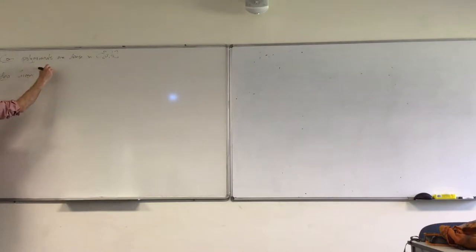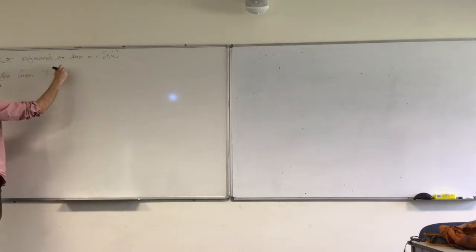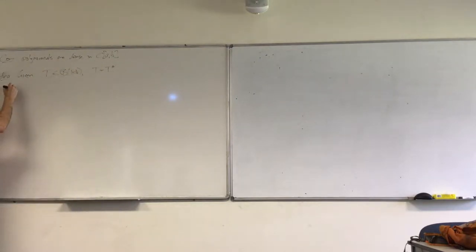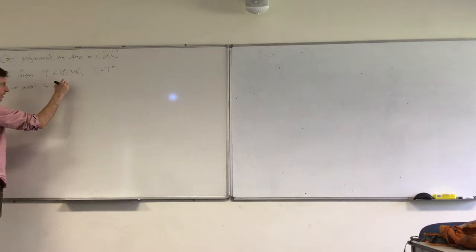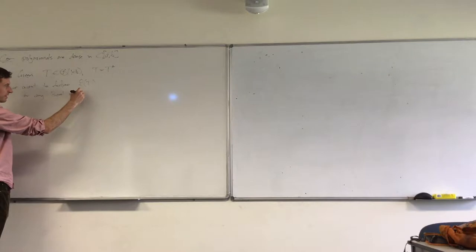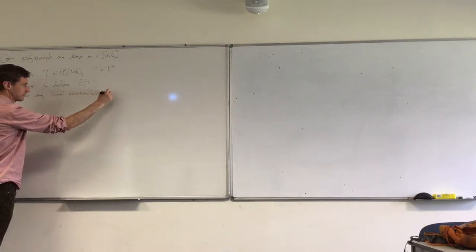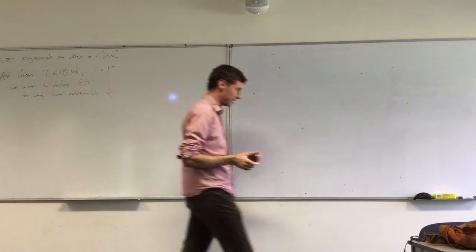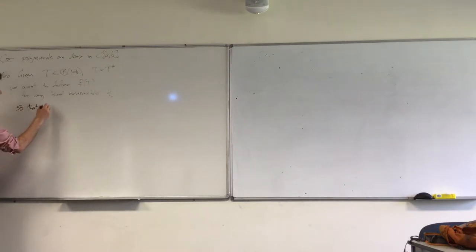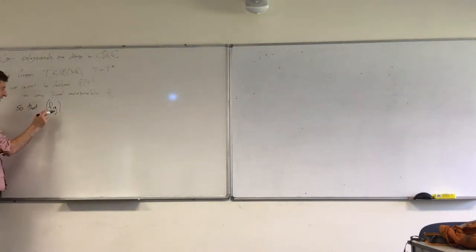So given T, a bounded operator with the additional assumption that it's self-adjoint, we want to define f(T). In fact, we want to do this for any real measurable function. And we want to do this in such a way that it's an algebra homomorphism.